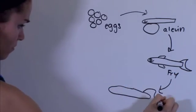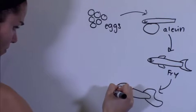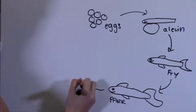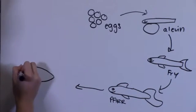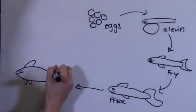Fry then grow and develop into par. Once par have reached sufficient size, they migrate toward the sea and transition into smolt form. Once fully adapted, they are termed an adult.